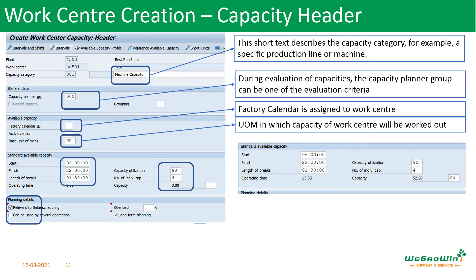After entering all these details and pressing Enter, we get the calculated results. Operating time is 13 hours 5 minutes. How is it calculated? Start time 6 to finish time 22 is 16 hours. We reduce the 1.5-hour break, giving 14.5 hours. 90% of 14.5 hours is 13.05 hours. The number of individual capacities is 4, so 4 multiplied by 13.05 gives 52.2 hours — that is the available capacity. This is what we saw as the illustration in our previous session, but now we are also seeing the capacity utilization parameter.